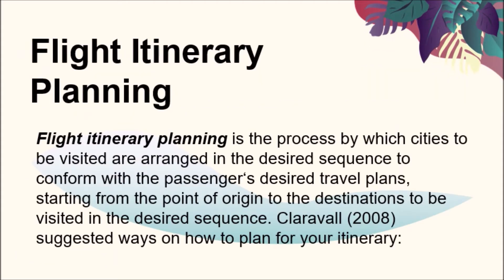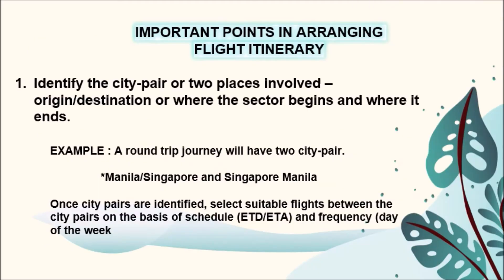What is Flight Itinerary Planning? Flight Itinerary Planning is the process by which cities to be visited are arranged in the desired sequence to conform with the passenger's desired travel plans, starting from the point of origin to destinations in the desired sequence. Important points in arranging flight itinerary: Number one, identify the city pairs involved — the origin or destination, where the sector begins and where it ends. For example, a round-trip journey will have two city pairs like Manila–Singapore and Singapore–Manila. Once city pairs are identified, select suitable flights based on schedule — estimated time of departure, estimated time of arrival, and frequency or day of the week.